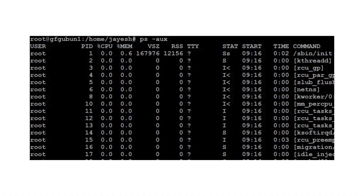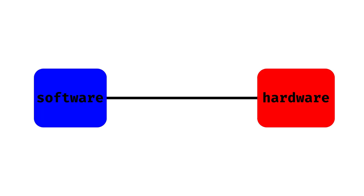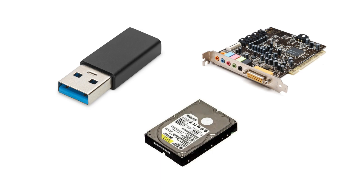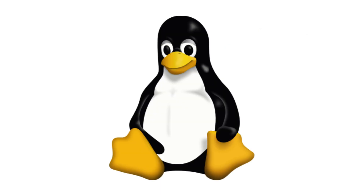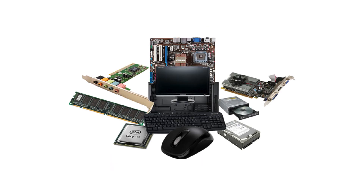Linux also has a /proc file system, a virtual directory that shows real-time information about processes and system hardware. Similarly, /dev holds device files, which let software interact with hardware like disks, USBs, and sound cards. Kernel and system messages are stored in the dmesg log, which is useful for debugging hardware issues.